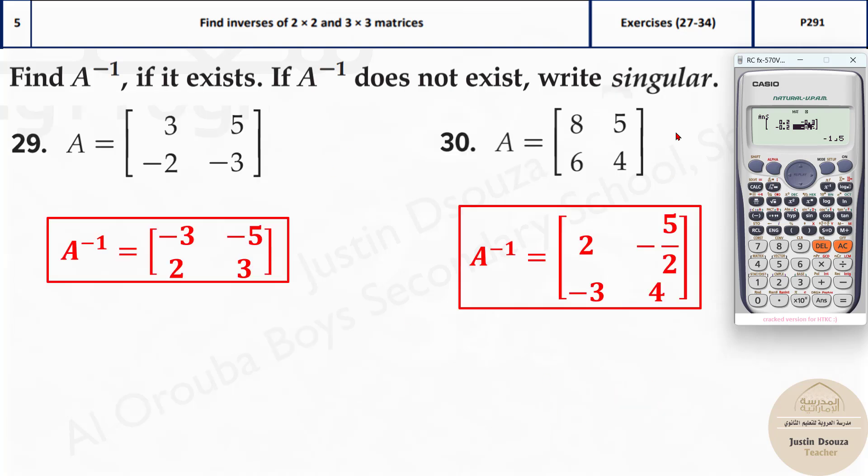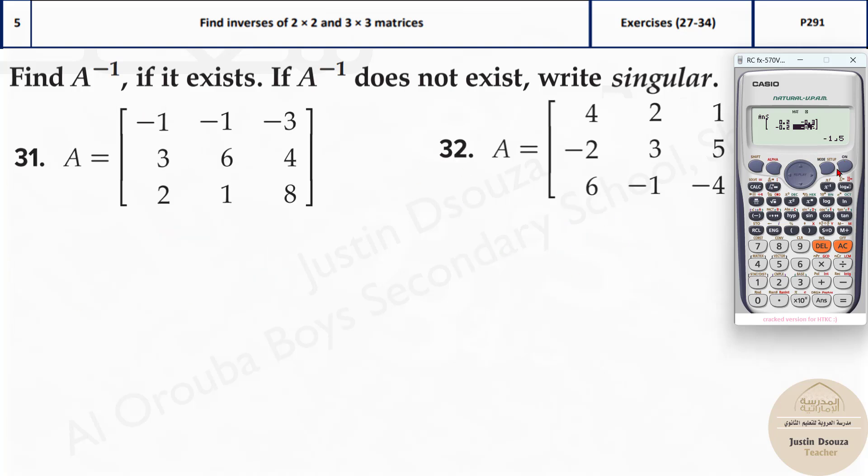Even if it is a 3 cross 3 matrix, it's same method. Please do this by yourselves and I'll do one 3 cross 3 matrix. I will just clear it out over here. Now once I clear it, I can't press shift and 4, it doesn't work because I need to go to mode and 6 for the first time, type in the matrix A, it's 3 cross 3 so it's option 1.